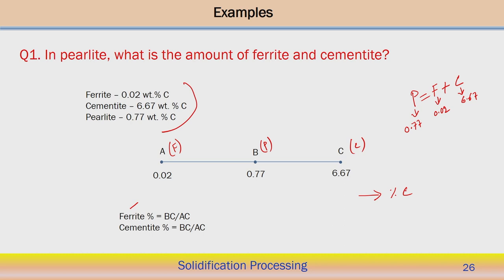Ferrite percentage equals BC divided by AC. BC is the difference between C and B: 6.67 minus 0.77% carbon. AC is the difference between C and A: 6.67 minus 0.028% carbon. We can calculate the relative percentage of ferrite by performing this division, then multiplying by 100 to convert the fraction into a percentage.